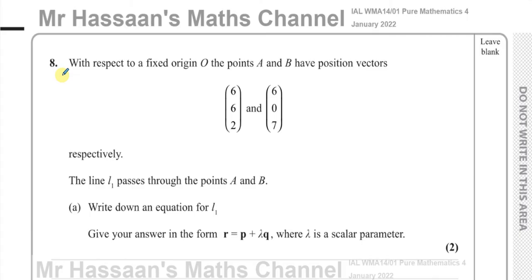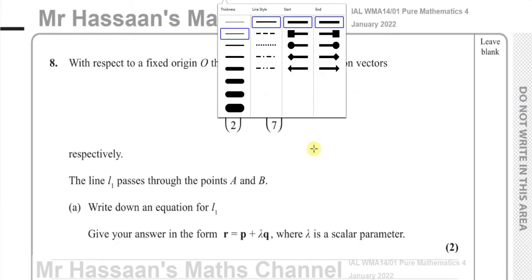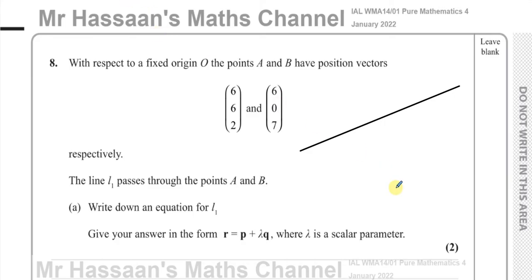The equation of a straight line in terms of vectors is given by a point which is on the line and its position vector with respect to the origin. Say you have a line going like this and this is the origin. To write down the equation of the line, I need to have a point on the line — or I need to know the position vector of a point on the line, which means its position with respect to the origin.